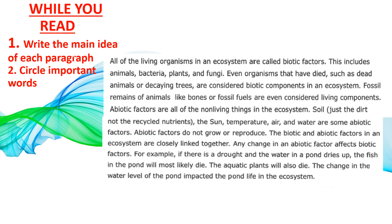Paragraph 2: All of the living organisms in an ecosystem are called biotic factors. This includes animals, bacteria, plants, and fungi. Even organisms that have died, such as dead animals or decaying trees, are considered biotic components in an ecosystem. Fossil remains of animals like bones or fossil fuels are even considered living components. Abiotic factors are all of the non-living things in an ecosystem — just the dirt, not the recycled nutrients. The sun, temperature, air, and water are some abiotic factors. Abiotic factors do not grow or reproduce.